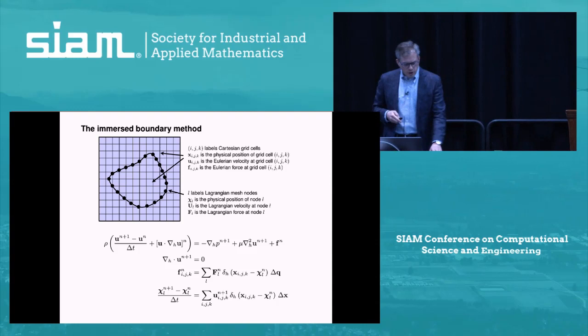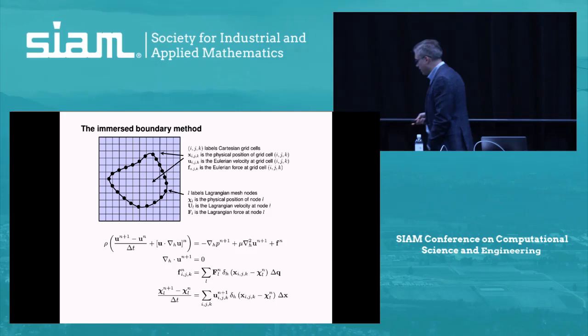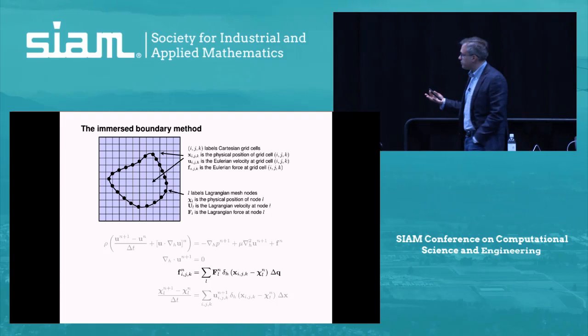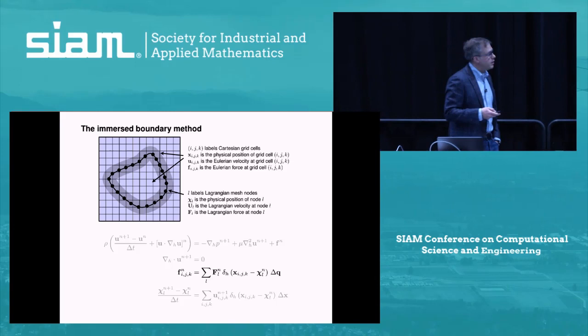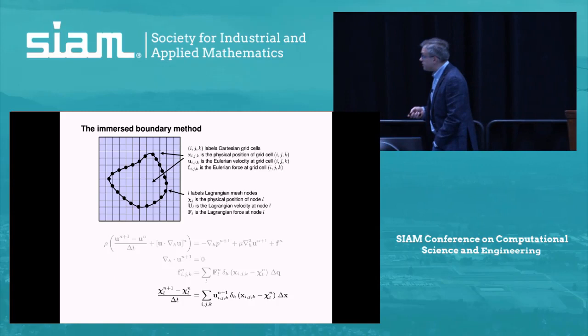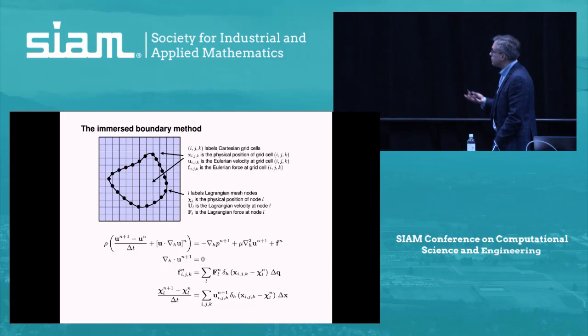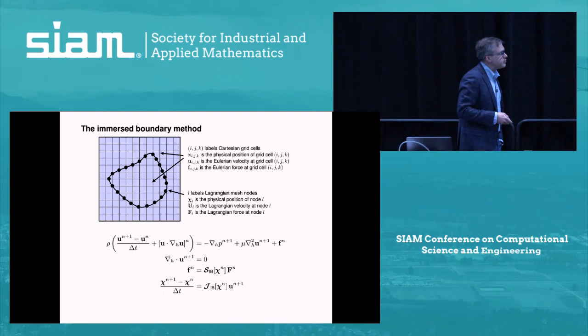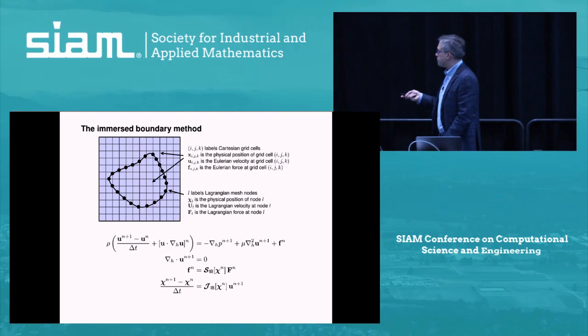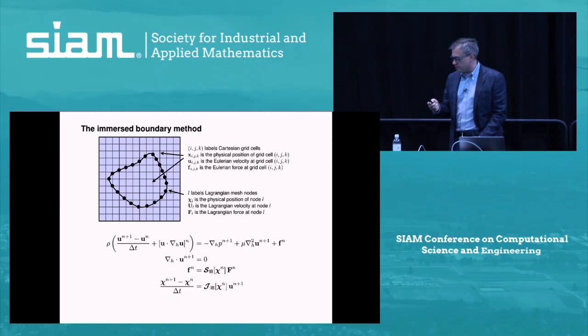We can briefly go through the basic time-stepping. The idea is to compute forces in the current configuration of the structure, smear those forces onto the background grid, solve the Navier-Stokes equations using that regularized body force, and use the resulting velocities to determine the motion of the interface. You can make this more accurate in time by using higher-order time-stepping schemes. We call the operator converting Lagrangian forces to Eulerian forces the spreading operator S, and its adjoint — mapping Eulerian velocities to Lagrangian velocities — is J.